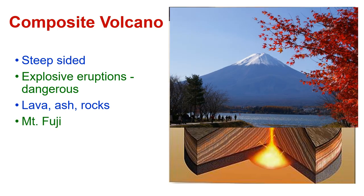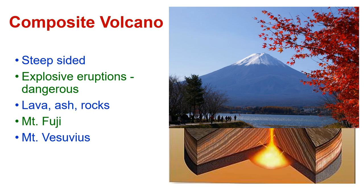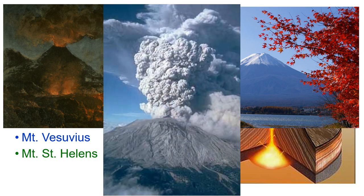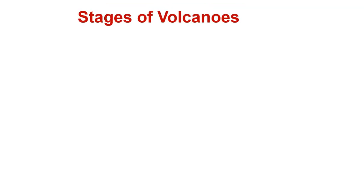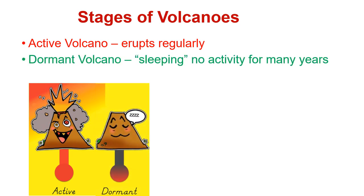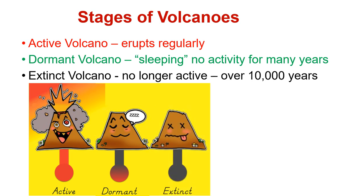Mount Fuji is a composite volcano, as was Mount Vesuvius. And Mount St. Helens is a composite volcano — and there she is. There are different stages of volcanoes. You have active volcanoes which erupt regularly. You have dormant volcanoes, called sleeping volcanoes, that have not had activity for many years. And then you have extinct volcanoes — they were active at one time but over the course of 10,000 years they have not been active at all.